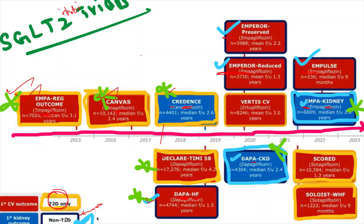Keeping this classification in mind, you can then study the individual trials. Common questions asked in viva include: what is the dose of the drug used in each trial, what was the benefit seen, and what eGFR cutoff was used. These are common viva questions in this category.